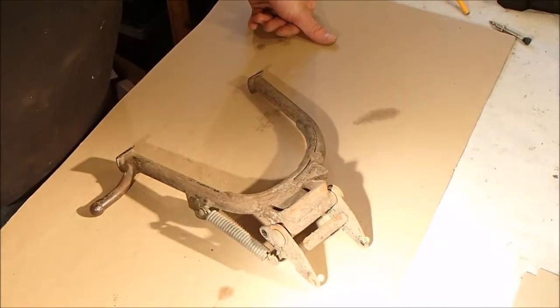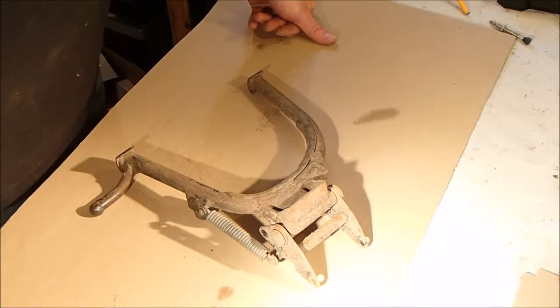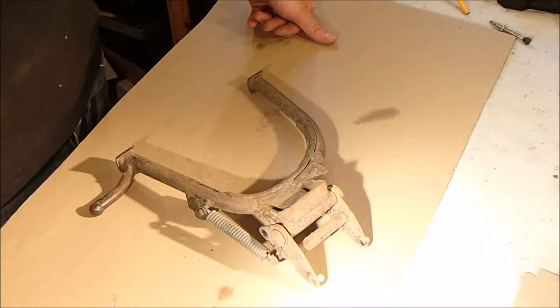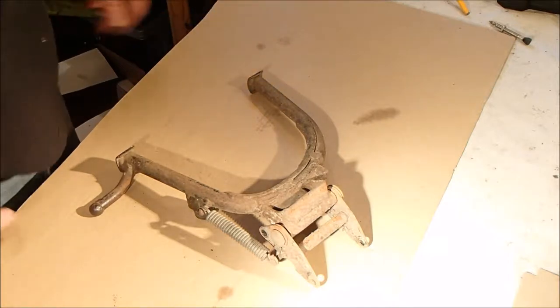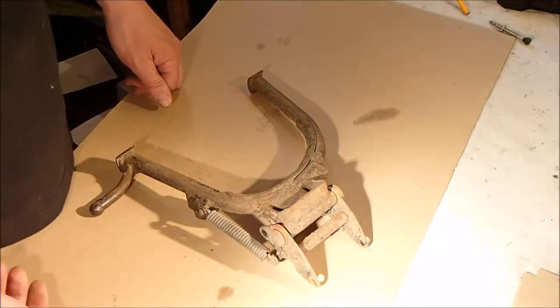I'm just going to pull it apart into its various components, give it a brush up on the wire wheel and a coat of paint, then stick it back on the bike. And while I'm doing it, I'm going to clean the exhaust up and give that a coat of paint as well. Just help keep some of the rust at bay. It's a good opportunity to grease up some of the pivots as well.